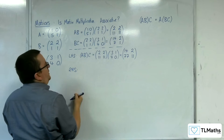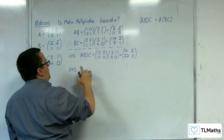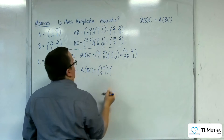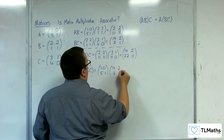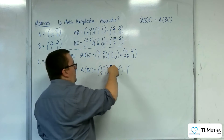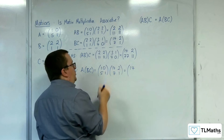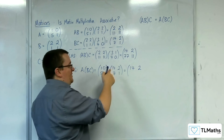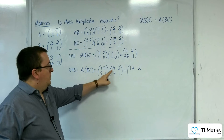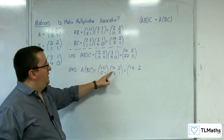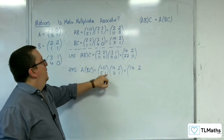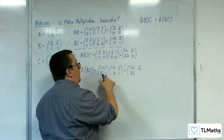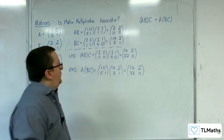Now we're checking the right-hand side — A times BC. So A is [1,0;5,1] and BC is [14,2;7,1]. We get: 1,0 times the column 14,7 is 14. 1,0 times 2,1 is 2. Then 5,1 times 14,7 — 5 lots of 14 is 70, plus 1 lot of 7 is 7, so 70 plus 7 is 77. And 5,1 times 2,1 — 5 lots of 2 is 10, 1 lot of 1 is 1, so we get 11 in total.